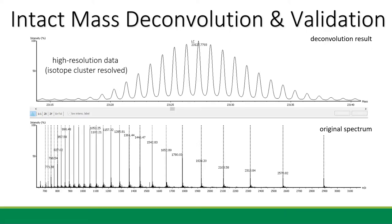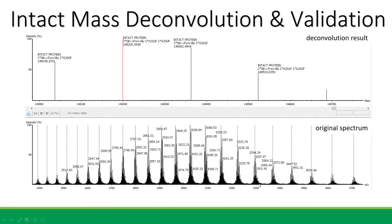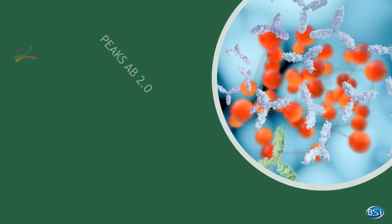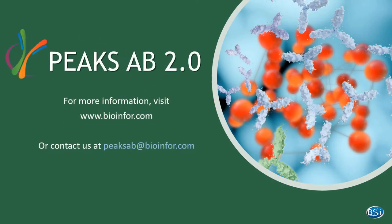This is another example showing the deconvolution result of a non-reduced antibody protein. You can see that the deconvoluted peaks are annotated, meaning that they match with user-input protein sequences considering commonly seen PTMs and glycan forms. Thank you for watching this video. We hope that the new functions in PICS-AB 2.0 can help you save time and effort analyzing antibody proteins.